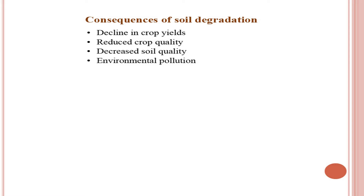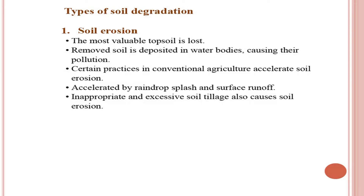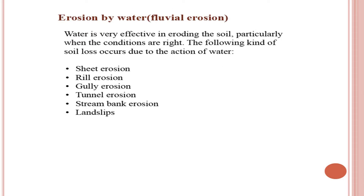Soil erosion is the detachment and transport of soil particles from one place and their deposition at another, primarily caused by water and wind. The most valuable topsoil is lost by erosion and deposited in water bodies, causing pollution. Conventional agriculture practices like raindrop splash, surface runoff, and excessive tillage accelerate soil erosion. Erosion by water is called fluvial erosion, and it causes several types of soil loss: sheet erosion, rill erosion, gully erosion, tunnel erosion, stream bank erosion, and land slips.